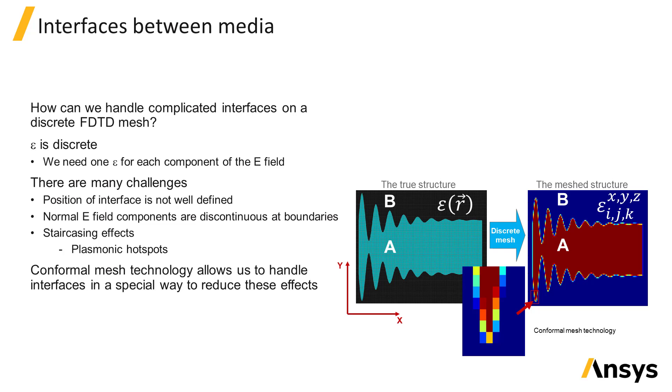Once we have discretized the permittivity in this manner, there are still challenges. First, the position of the interfaces is not well defined within the Yee cell. For example, if we have a Yee cell with a spatial grid of 40 nm, and we move an interface by as much as 20 nm, we may not see any difference in the FDTD results because the permittivity discretization could be identical.